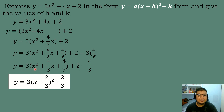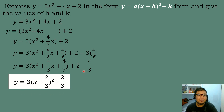The square root of x² is x. The sign of the middle term is positive. The square root of 4/9 is 2/3. So the factor is (x + 2/3)². Then 2 minus 4/3 equals 2/3. So the vertex form of y = 3x² + 4x + 2 is y = 3(x + 2/3)² + 2/3.